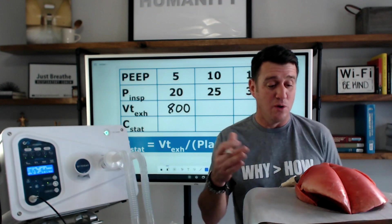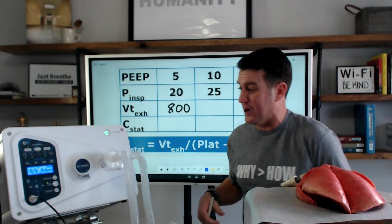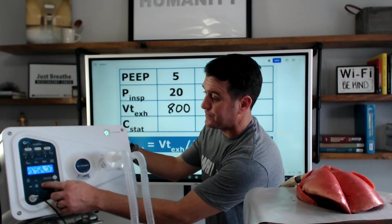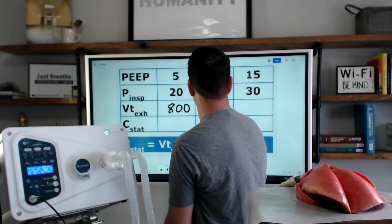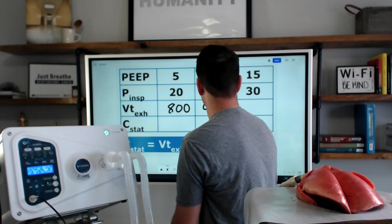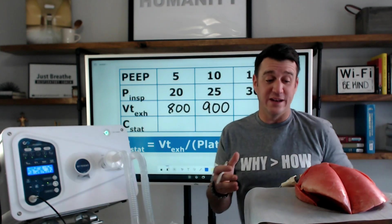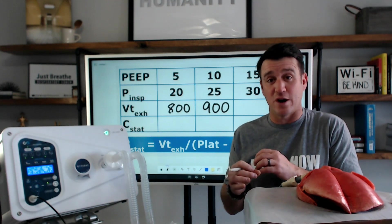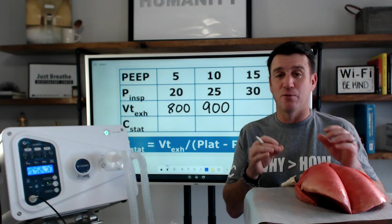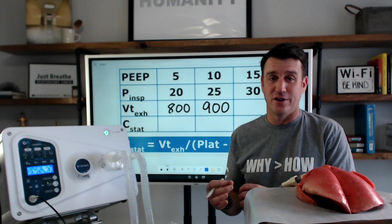What we have to do is look and say, what are our exhaled tidal volumes now? If we take a look at that, we see that we have a tidal volume now of 900. So, we now have a PEEP of 10. We're putting 15 centimeters of water pressure on top of that and we're getting a larger tidal volume. We're going to raise this one more time. Let's see what happens when we go to a PEEP of 15.